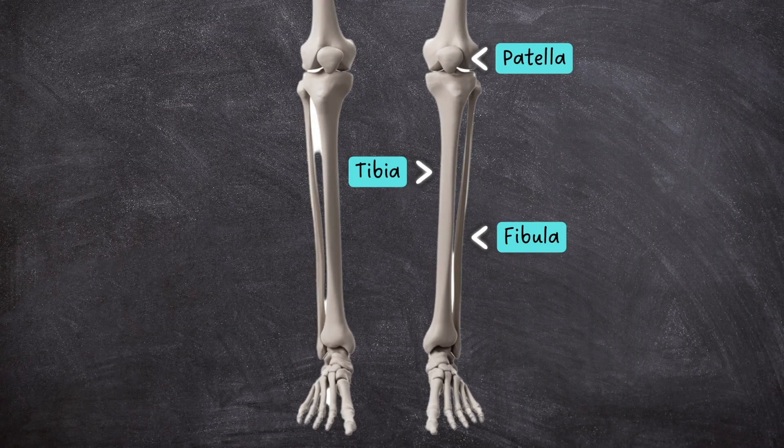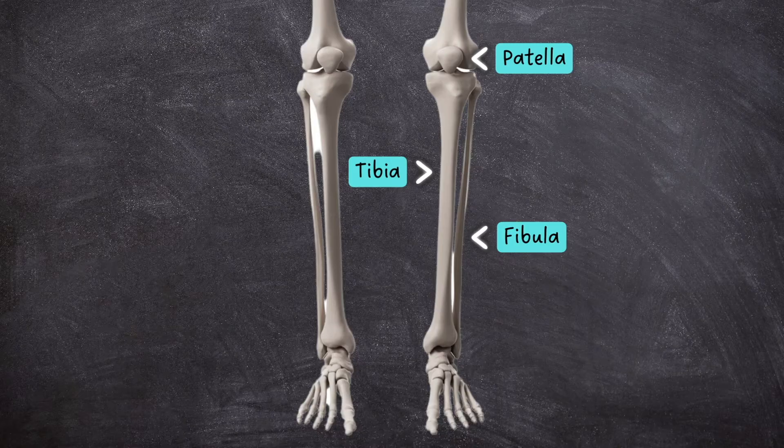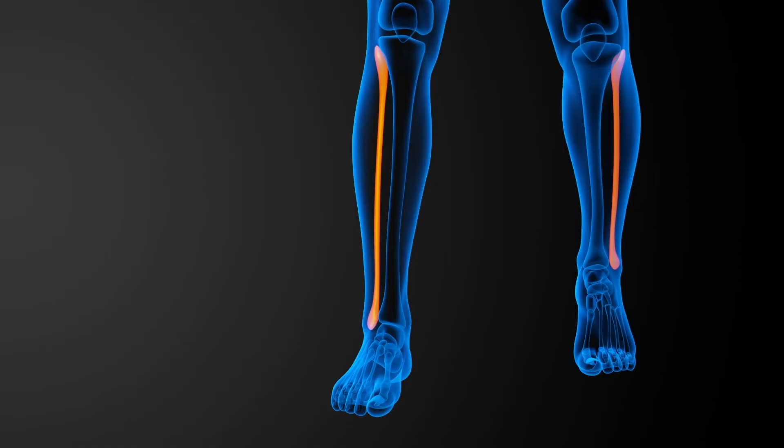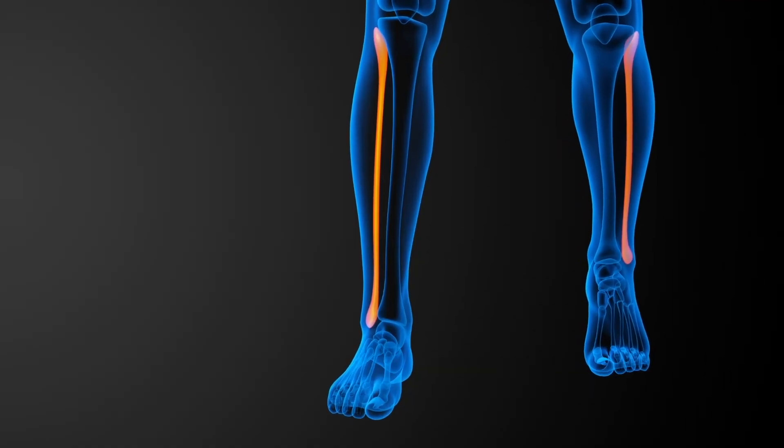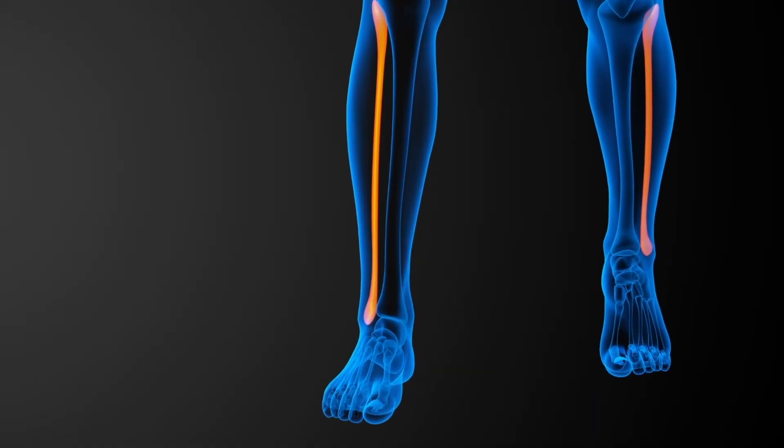The fibula is much smaller and thinner than the tibia. It's located just behind the tibial head at the knee joint, and then runs down the lateral aspect, or outside of the leg, until it reaches the ankle.